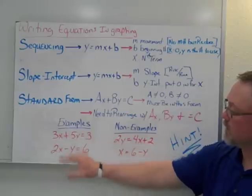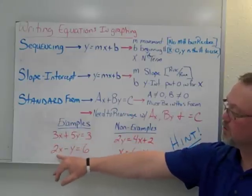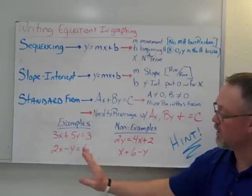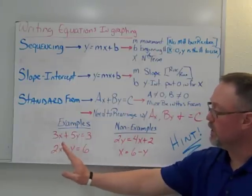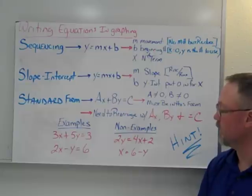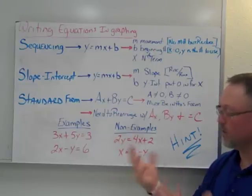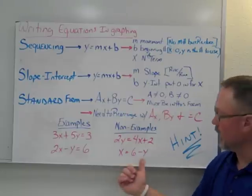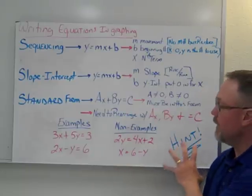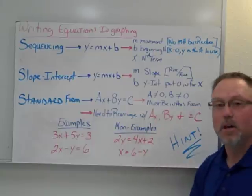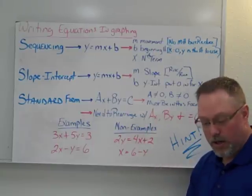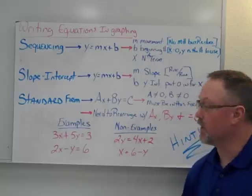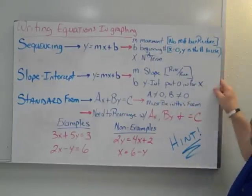Here are some examples: 3x plus 5y equals 3, and 2x minus y equals 6. You can see the x and the y terms, then the c value. Non-examples would be equations not in that order, like 2y equals 4x plus 2, or x equals 6 minus y. One big hint: with the ax term, you cannot have fractions and you cannot have a negative coefficient, so you have to rearrange through the work.